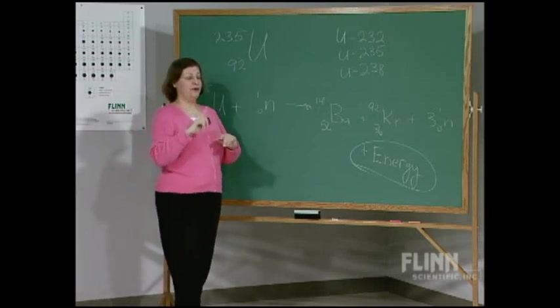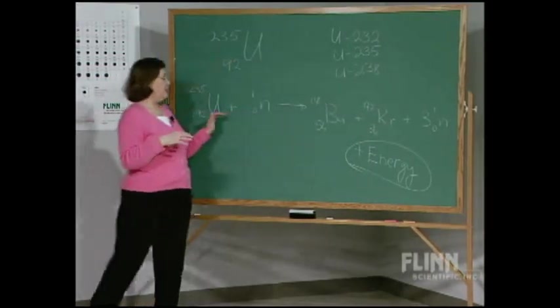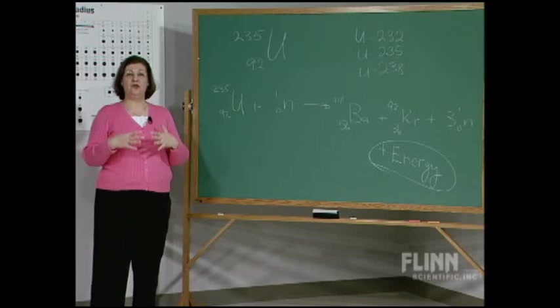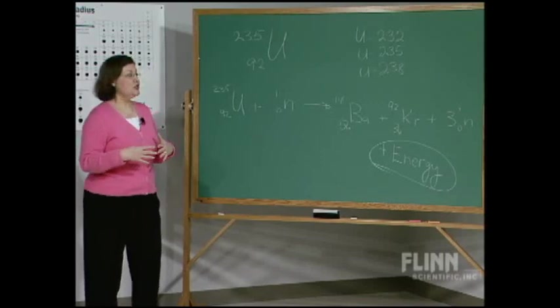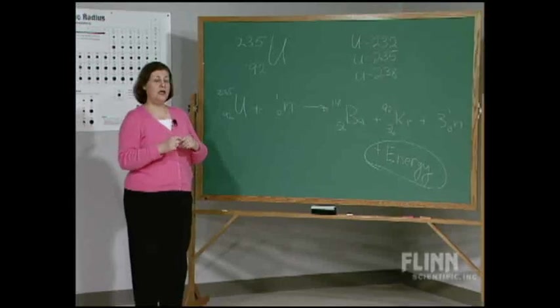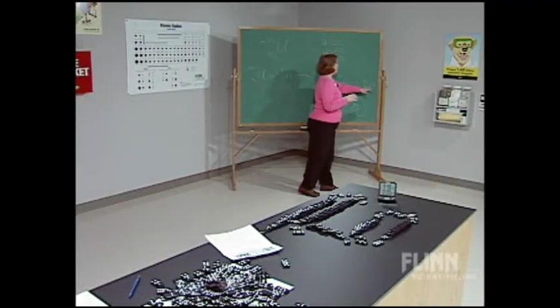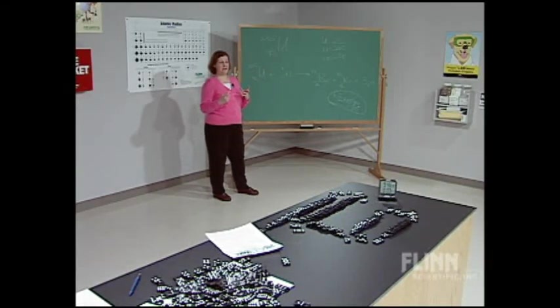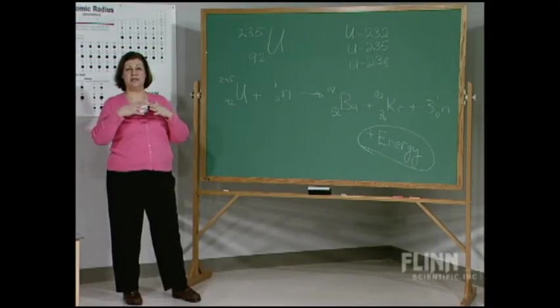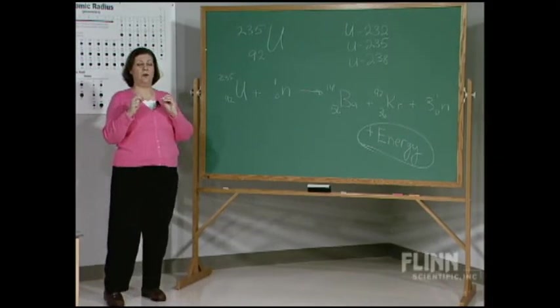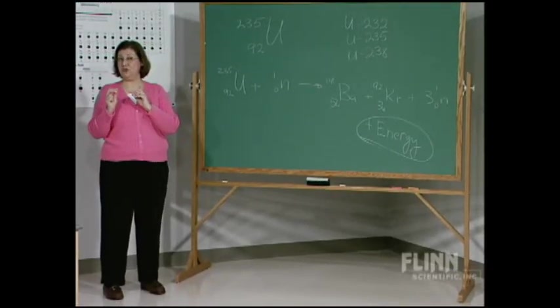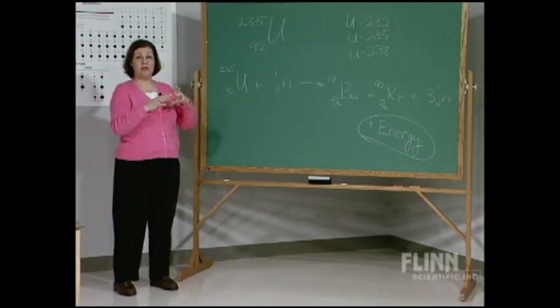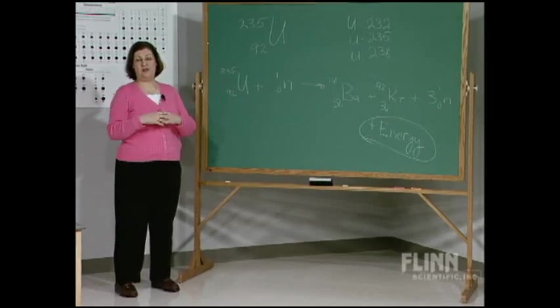If you have on average one neutron that is able to initiate another fission event, then that's called a critical process. That's the type of nuclear fission that is used in nuclear reactors. What they have to do in nuclear reactors is control the amount of neutrons that become available to start another fission event, and they do that with what are called control rods. They can vary the depth to which they put those control rods with the fuel rods to control that, because obviously it's very important that that not go supercritical. So if you have one neutron produced that can be absorbed by a U-235 and that will sustain the chain reaction, that's called critical.